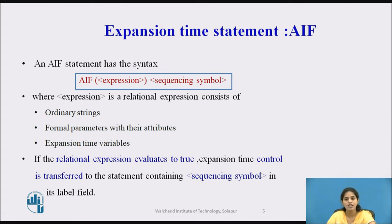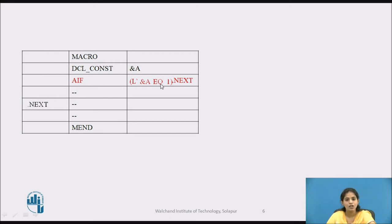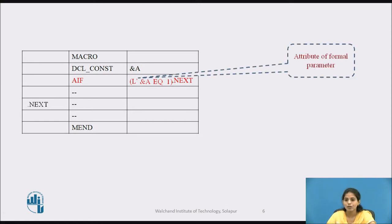If the given expression evaluates to true, then expansion time control is transferred to the statement containing the sequencing symbol in its label field. In the example, the name of the macro is DCL CONST, having a single parameter &A. We use the AIF statement: AIF (L'&A EQ 1) .NEXT — here L is the attribute of the formal parameter.